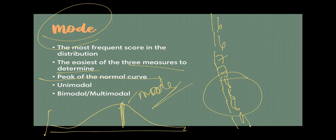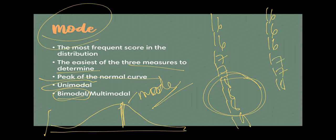There are distributions that are unimodal, meaning there is only one mode in the distribution. But there is also a bimodal distribution. For example, if you have sixteen, sixteen, sixteen, seventeen, eighteen, eighteen, eighteen, eighteen, nineteen, twenty — you have two modes here because you have three sixteens and three eighteens. Wait, that's actually three sixteens and four eighteens, so you have two modes.